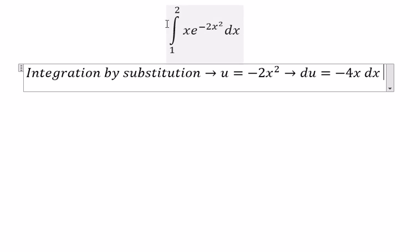Because we don't have the negative number 4, so we divide both sides with negative number 4.